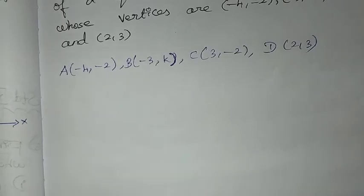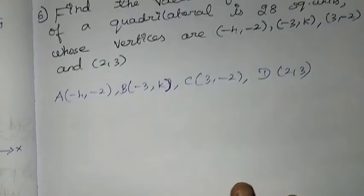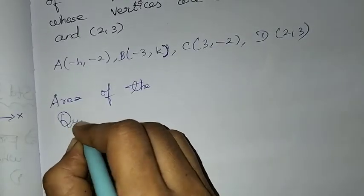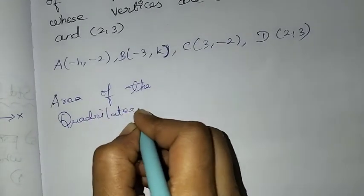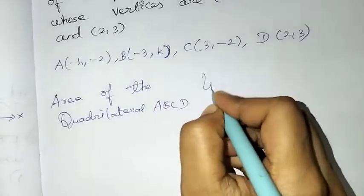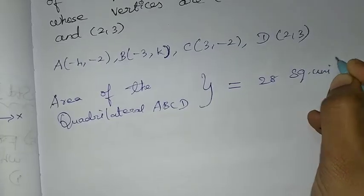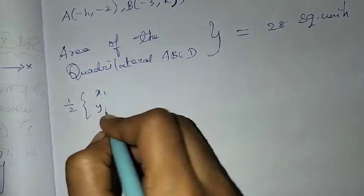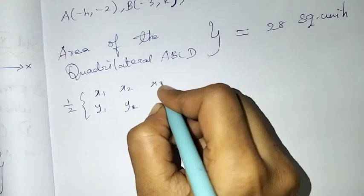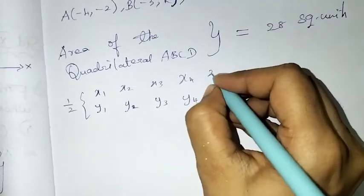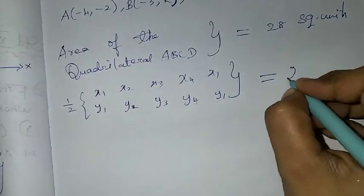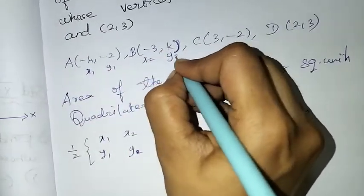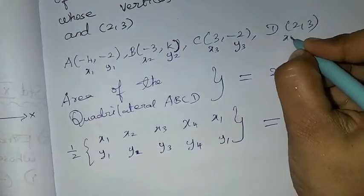Now we can apply the area of the quadrilateral formula. I will label the points: this will be x1, y1; this will be x2, y2; this will be x3, y3; this will be x4, y4.